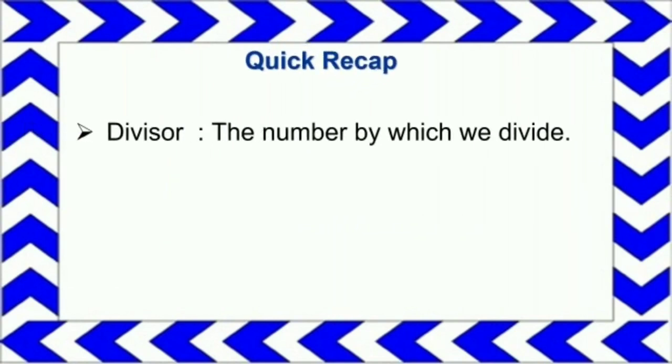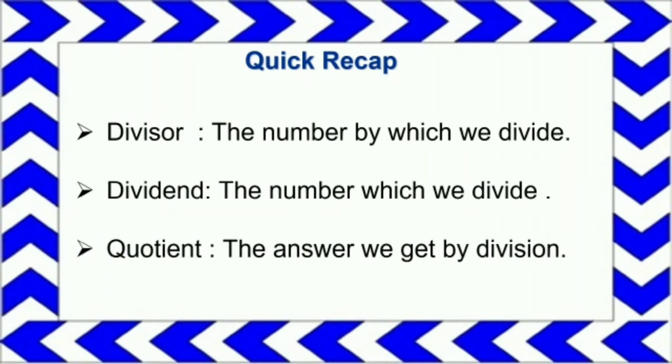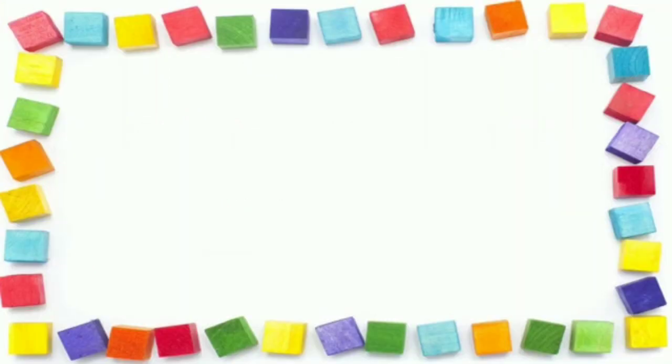Let's recall the terms related to division. Divisor: the number by which we divide. Dividend: the number which we divide. And the quotient is the answer we get by division.